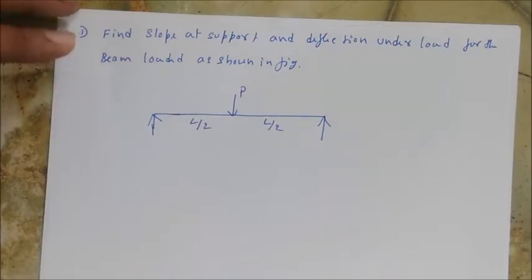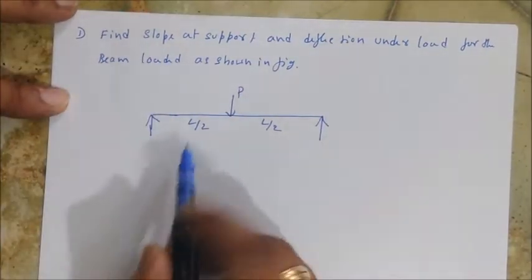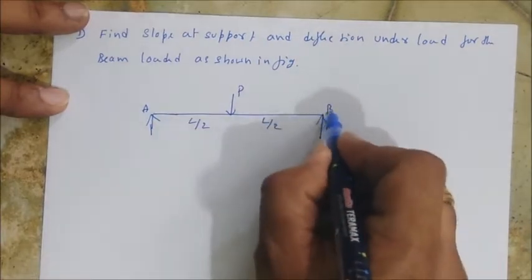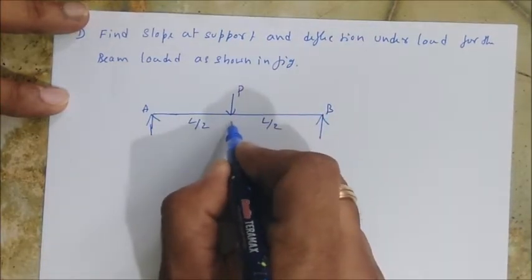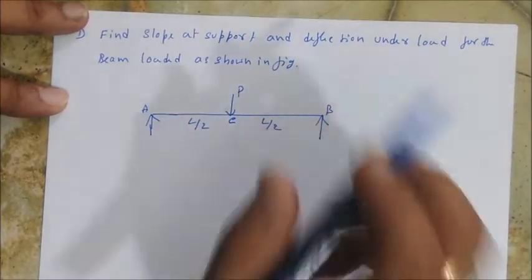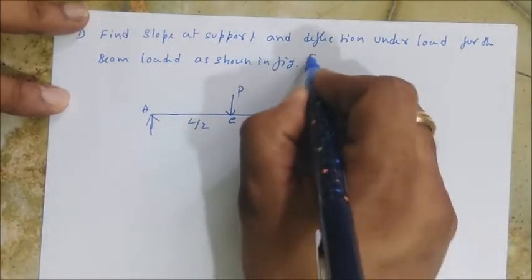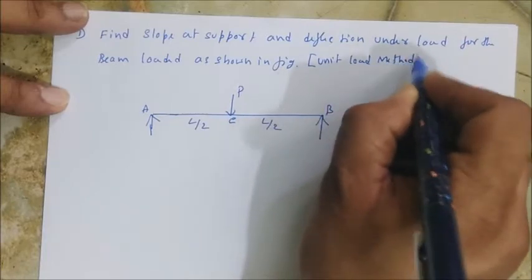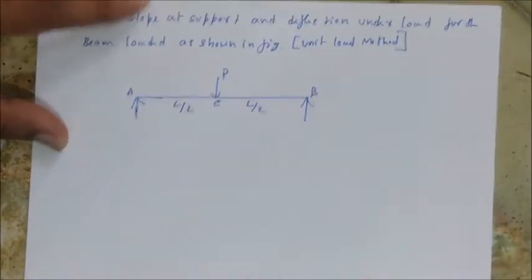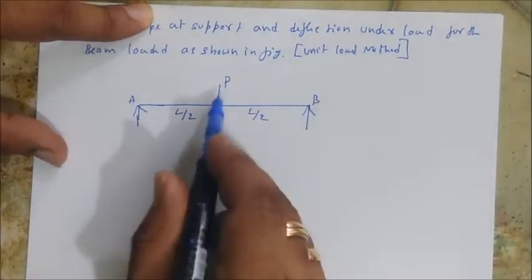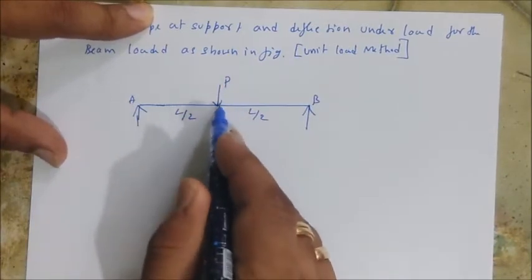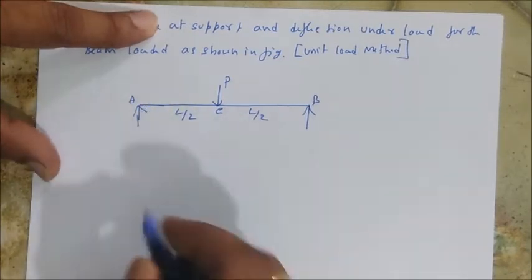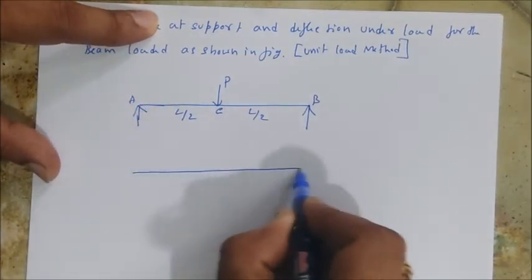Let's find the slope and deflection — slope at the support A and B, and deflection under the point load at C — by using the unit load method. So it is also solved by the unit load method. To find the deflection I need to apply a unit load at C, and to find the slope at A I need to apply a unit moment at A. So first let's write the beam once again.